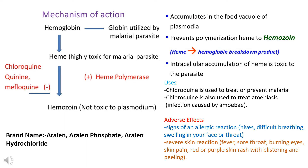Uses of chloroquine: it is used to treat or prevent malaria and also to treat amoebiasis, the infection caused by amoeba. Adverse effects of chloroquine include allergic reactions such as difficulty in breathing, swelling of the face and throat, and sometimes severe skin reactions like fever, sore throat, burning eyes, skin pain, and red or purple skin rashes with blistering and peeling.